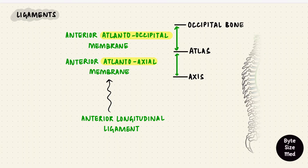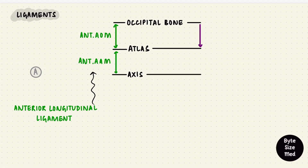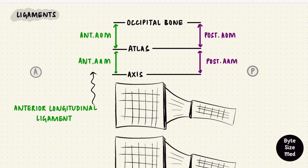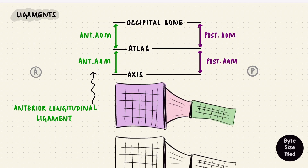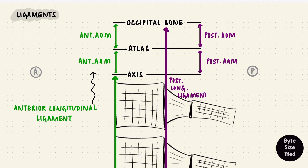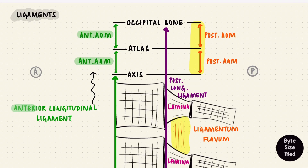These were on the anterior aspect. Just like that, there are posterior atlanto-occipital and posterior atlanto-axial membranes on the posterior aspect. To understand these, we need some of the other vertebrae — hemisections of more typical vertebrae lower down, showing the body, lamina, and spinous process. The anterior longitudinal ligament runs along the front, while the posterior longitudinal ligament goes along the posterior surface of the vertebral bodies and continues upward. Between the laminae is the ligamentum flavum. The anterior membranes are continuations of the anterior longitudinal ligament, and the posterior ones are modifications of the ligamentum flavum. All these ligaments prevent excessive movements of the joints.